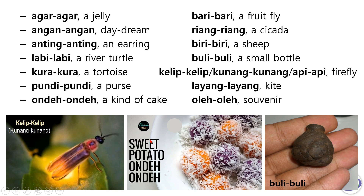Here are some examples. Agar-agar, a jelly. Angan-angan, daydream. Anting-anting, an earring. Labi-labi, a river terrapin. Kura-kura, a tortoise. Pundi-pundi, a purse. Ondeh-ondeh, a kind of cake made from sweet potato.